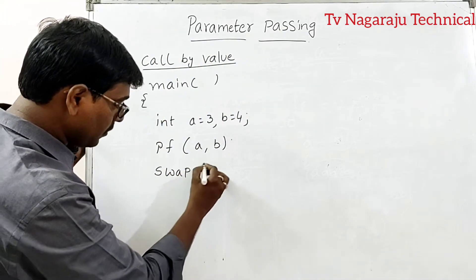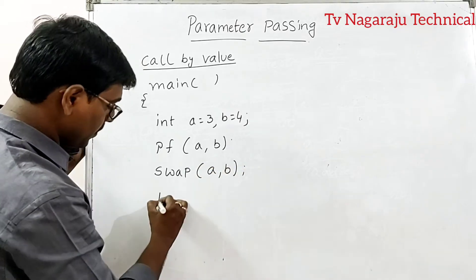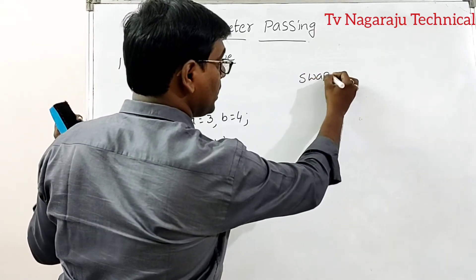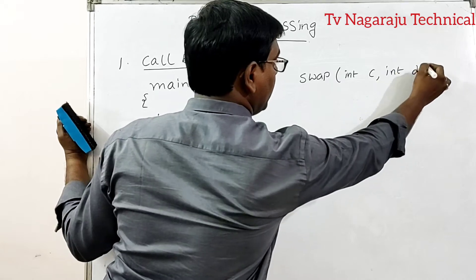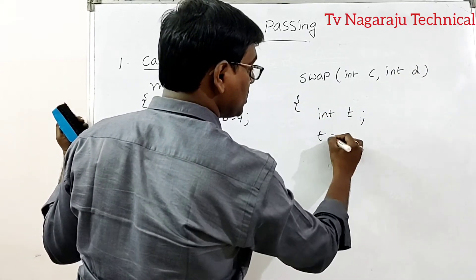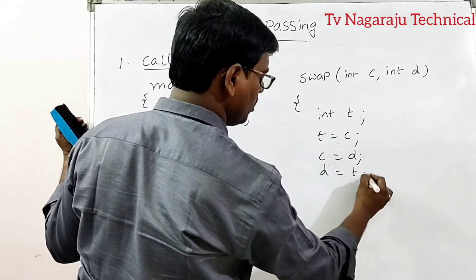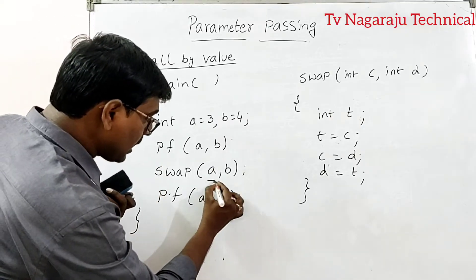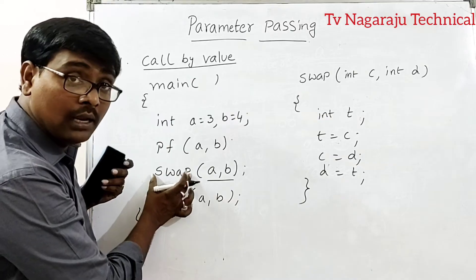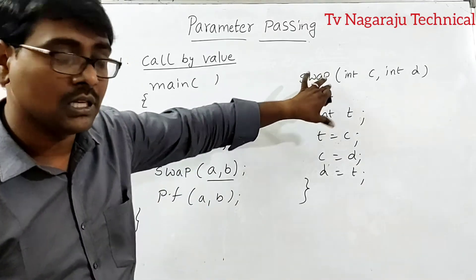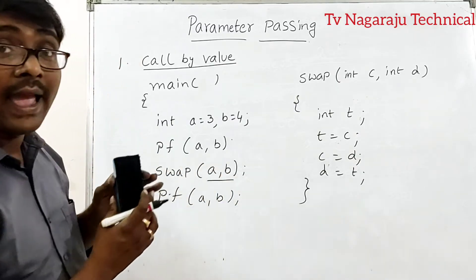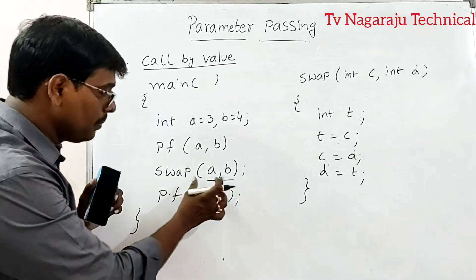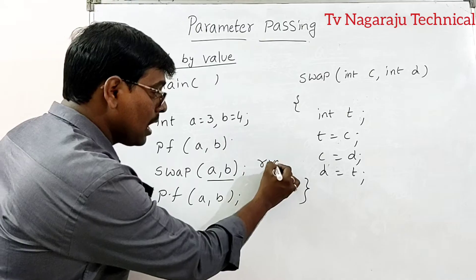Whenever we call the swap function, the function is defined as swap(int c, int d), where we declare a temporary variable and perform: t = c, c = d, d = t. Here, the calling procedure passes a and b — these are the actual parameters. C and d are the formal parameters.